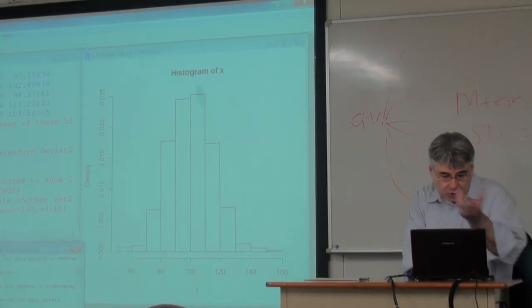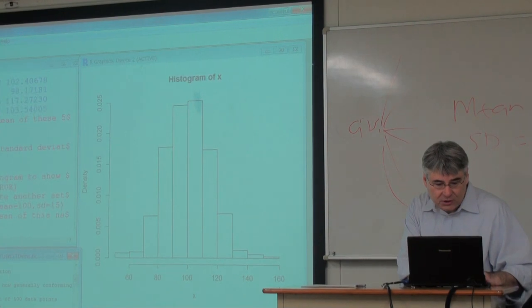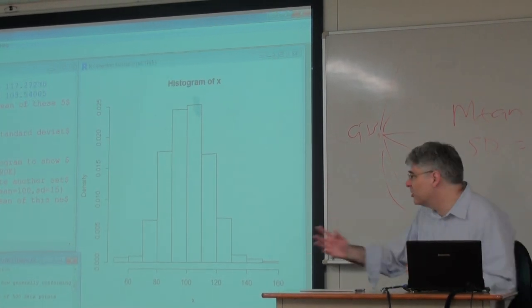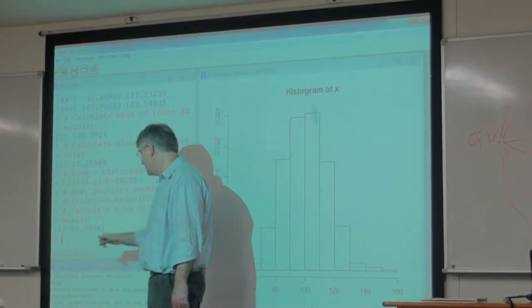Creating a new set of 500 drawings from this distribution and calculating the numbers here. Now it's a different number because every time you do that process it's never going to be exactly the same.